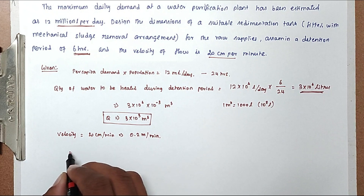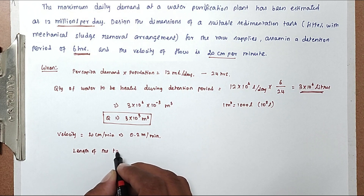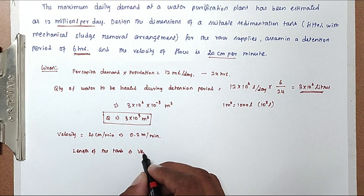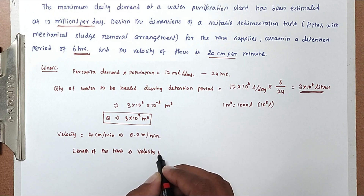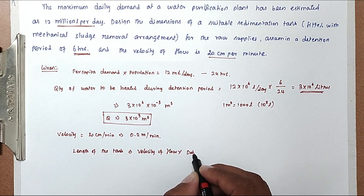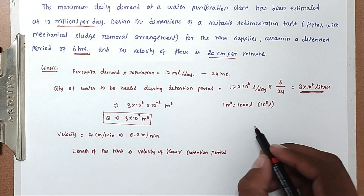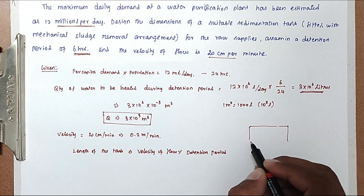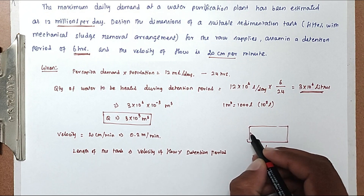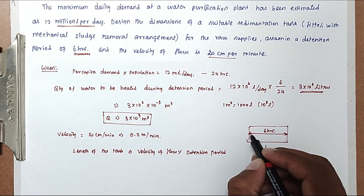Now the length of the tank: length of the tank equals velocity of flow multiplied by detention period. The detention period is 6 hours and the velocity is maintained throughout.